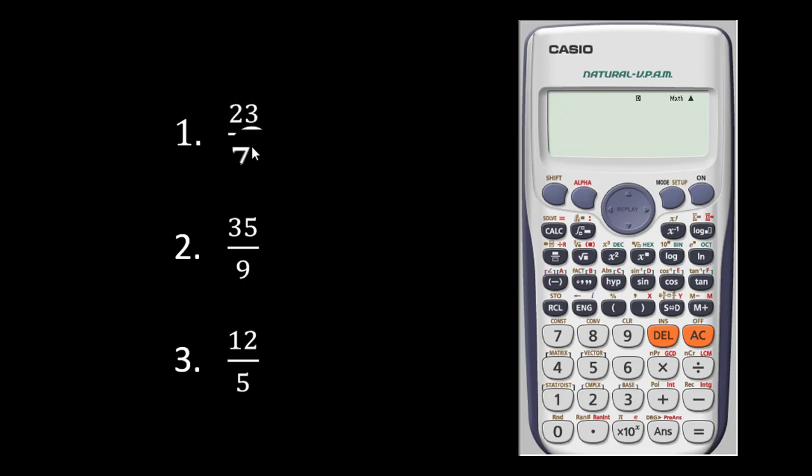We have 23 over 7, or 23 sevens. To actually look at this, we press the fraction key down here. This time don't press the shift key because we don't want to press a mixed fraction.